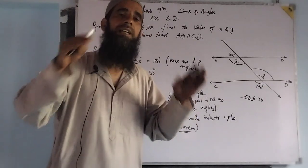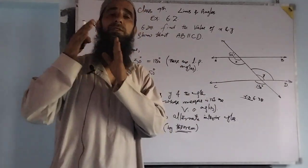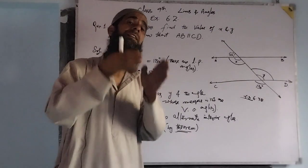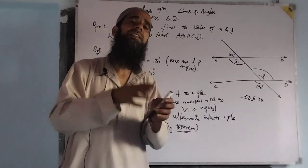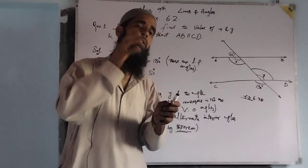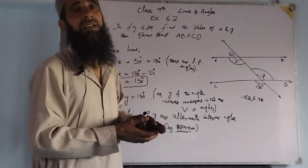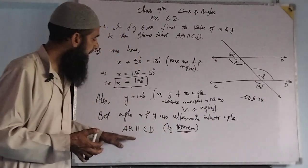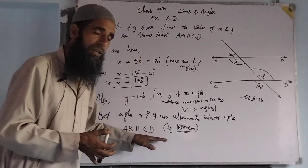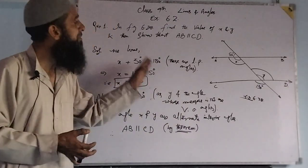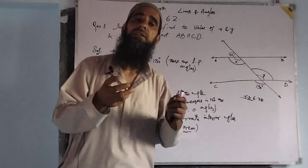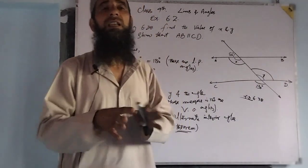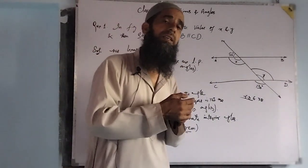AB is parallel to the second line CD. This is the statement of that theorem — by that theorem, AB is parallel to CD, since the alternate interior angles on both sides of the transversal are equal.